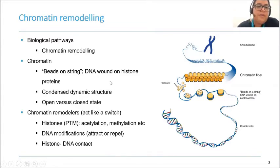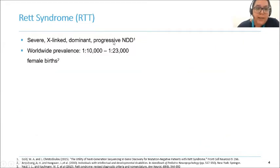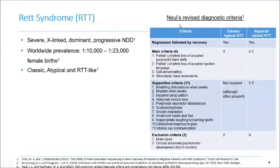One of the very widely known neurodevelopmental disorders caused by a defect in the chromatin remodeling pathway is Rett syndrome. Rett is a severe, progressive neurodevelopmental disorder that mainly affects females, with a worldwide prevalence of about one in 10,000 to one in 23,000 live female births. Newell's revised diagnostic criteria is often referred to for clinical diagnosis, and based upon this criteria, an individual can be classified as classic Rett or atypical Rett. When an individual cannot be distinctly placed in these two categories but still has Rett features, they are often referred to as Rett-like individuals.